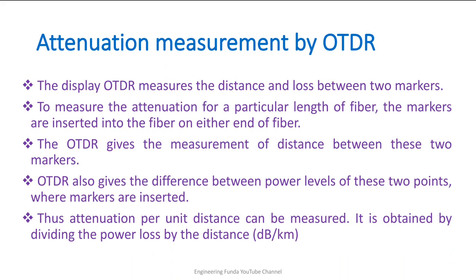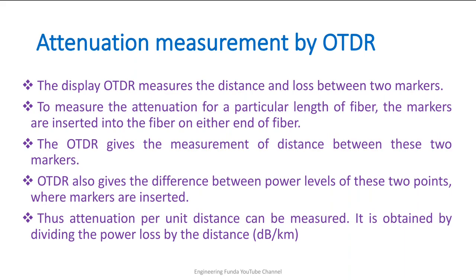For attenuation measurement by OTDR, as already seen in the OTDR display, it measures based on reflected signal. The display shows distance with respect to loss. You can place two markers at two positions, see how much loss is happening, calculate the distance between them, and by taking the ratio of loss with respect to distance you can determine how much attenuation is occurring. All these measurements can be done using OTDR. Thank you for watching this video; please give your valuable suggestions so future videos can solve queries and help viewers learn engineering subjects clearly.